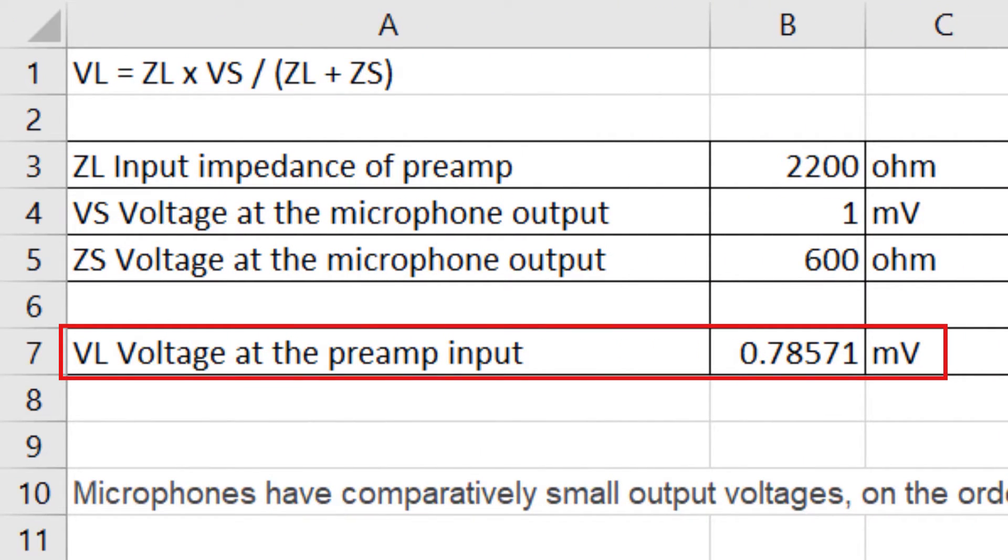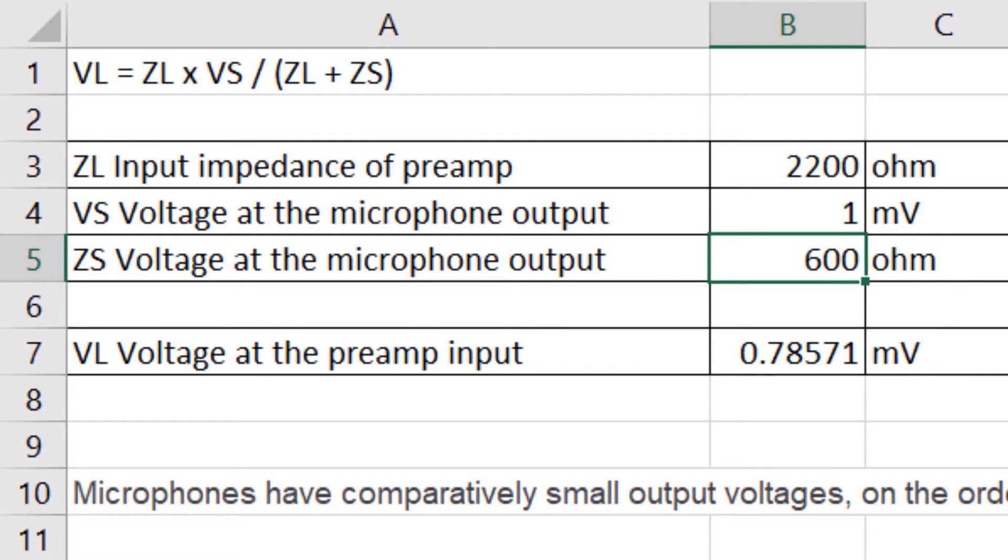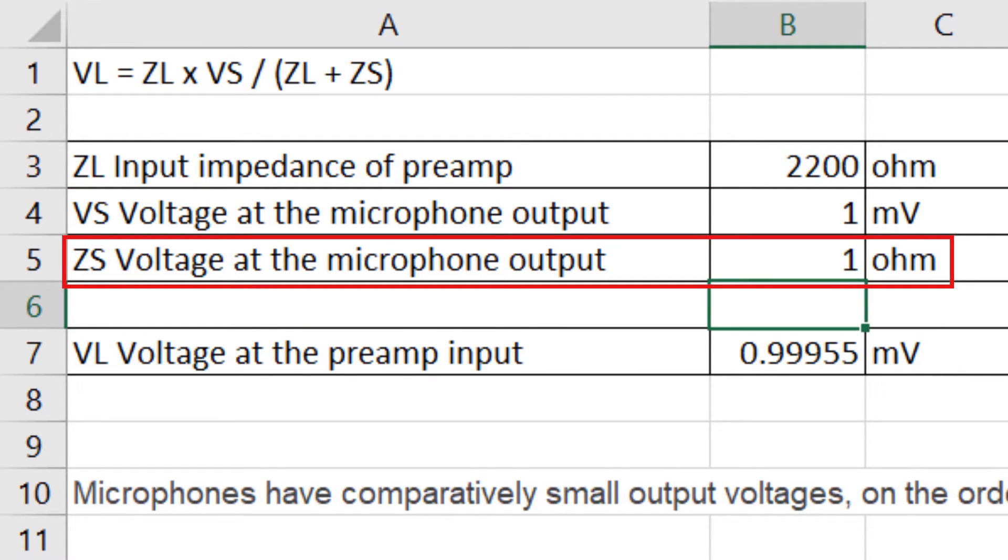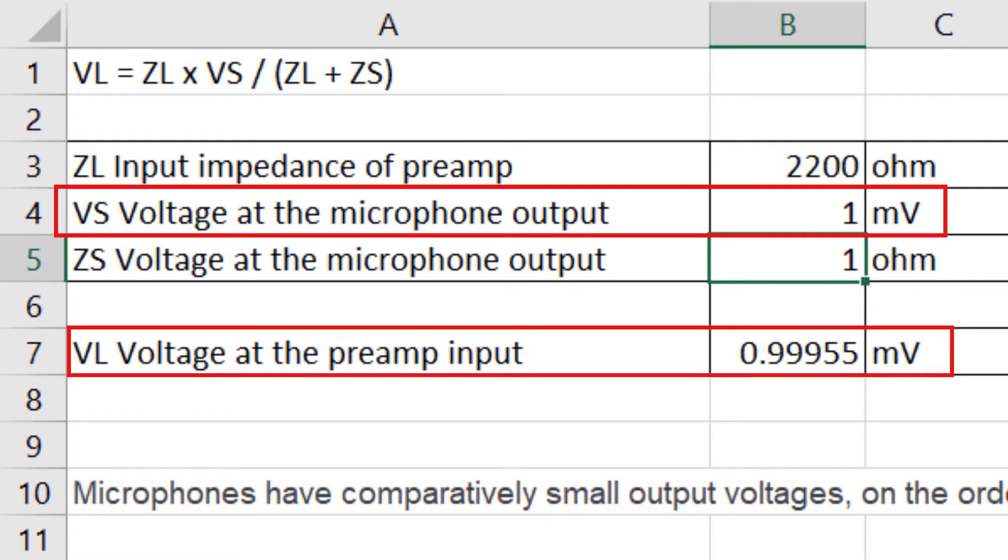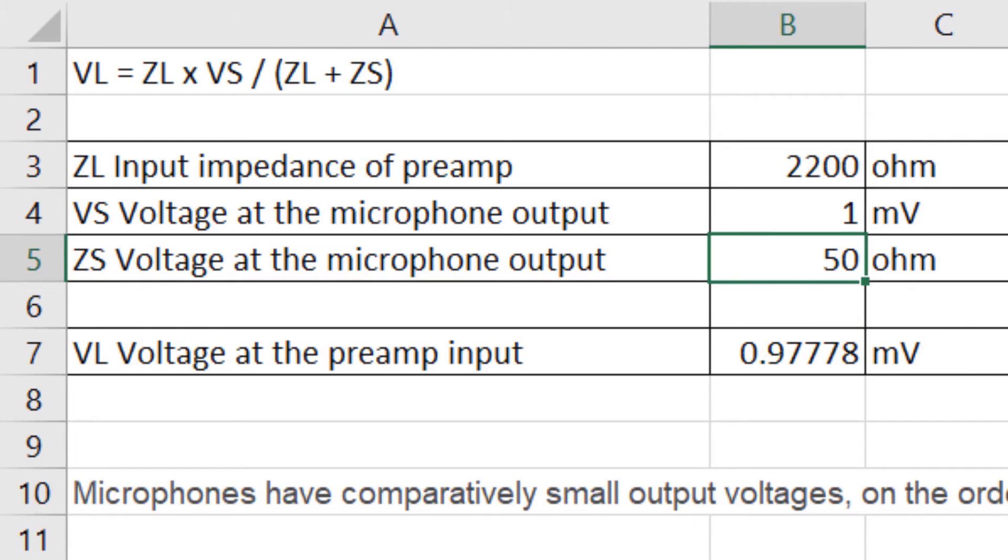The preamp voltage can never be higher than Mike's output voltage. The lower the output impedance, the closer the preamp voltage is to the output voltage. Therefore, to achieve as high as possible preamp voltage, we need as low as possible output impedance from the microphone.